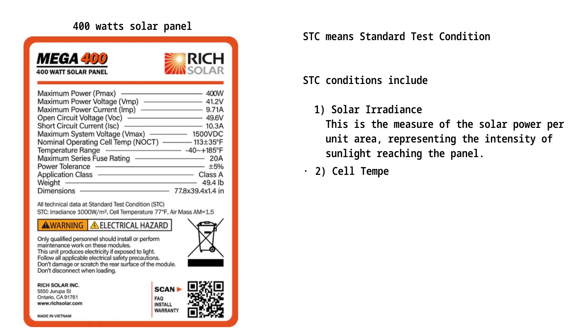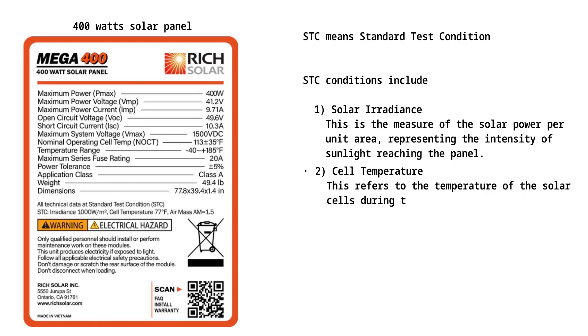2. Cell temperature at 25 degrees Celsius or 77 degrees Fahrenheit. This refers to the temperature of the solar cells during testing at 25 degrees Celsius or 77 degrees Fahrenheit.